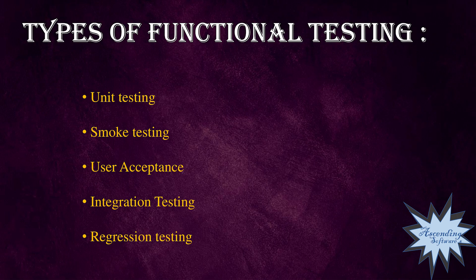Now let's talk about each one. Unit Testing: if we check the client's functionality at the unit level, we call that Unit Testing. For Smoke Testing: once the development team gives us a build, we check all the modules at a base level. That is Smoke Testing — a basic level check across all modules.